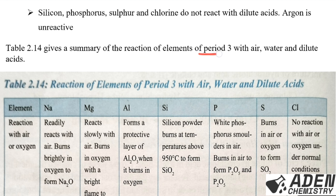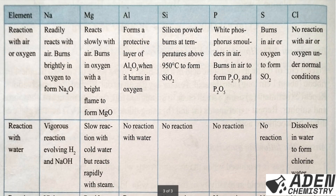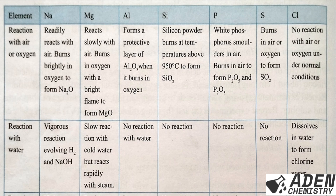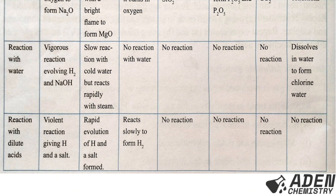Table 2.14 gives us a summary of reactions of Period 3 elements with air (oxygen), water, and dilute acids. The table covers seven elements — sodium, magnesium, aluminium, silicon, phosphorus, sulfur, and chlorine — excluding argon because it is unreactive. That is the end of our chapter two. Thank you for watching.